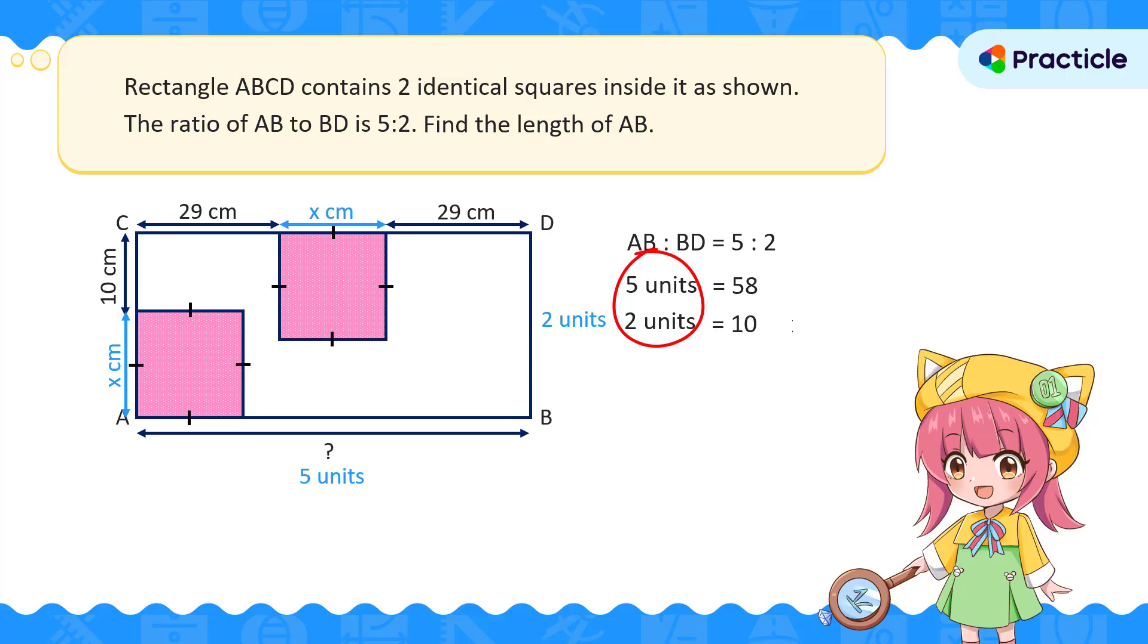5 units minus 2 units is 3 units, and 58 minus 10 is 48. Can you see that 3 units represent 48 cm? Try to figure out the value of one unit on your own. Did you get 16 cm?